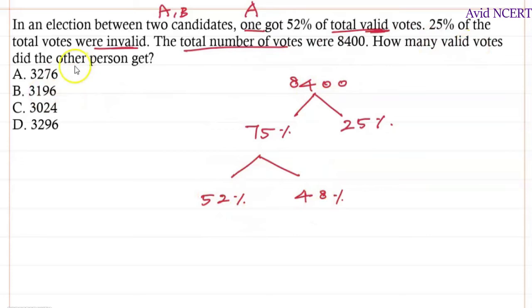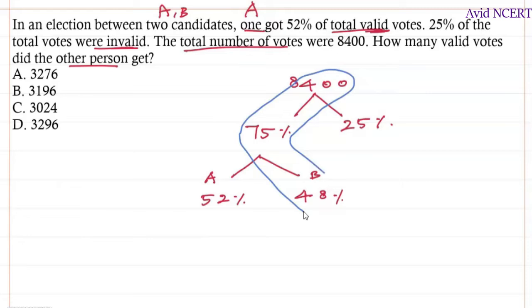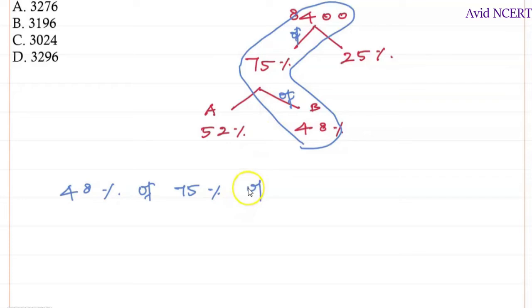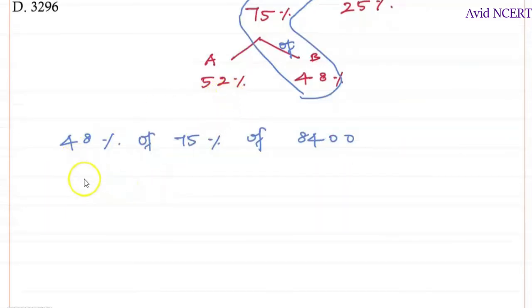We have to find the valid votes the other person, B, got. The number of votes B got is 48 percent of 75 percent of 8400. Just follow the arrows from the reverse: 48 percent of 75 percent of 8400.